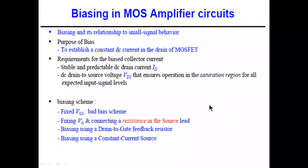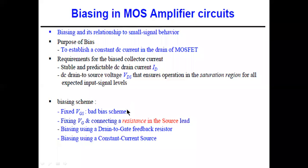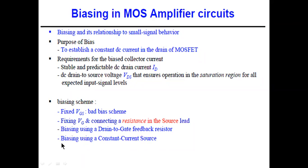The different biasing schemes are: fixed VGS (a bad scheme, similar to fixed VBE in BJT), fixing VG with a resistance in the source lead, biasing using a drain-to-gate feedback resistor, and biasing using a constant current source. The constant current source is out of syllabus but is the most used method in VLSI integrated circuit design.